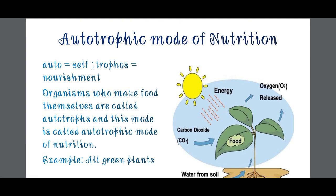In this diagram you can see the sun and a plant. The plant takes energy from the sun, absorbs water from the soil with the help of roots, and food is synthesized inside the leaves. The plant takes carbon dioxide from the atmosphere and releases oxygen, which we humans and animals and other living things respire. So in autotrophic mode of nutrition, living organisms make their own food and don't depend on others.